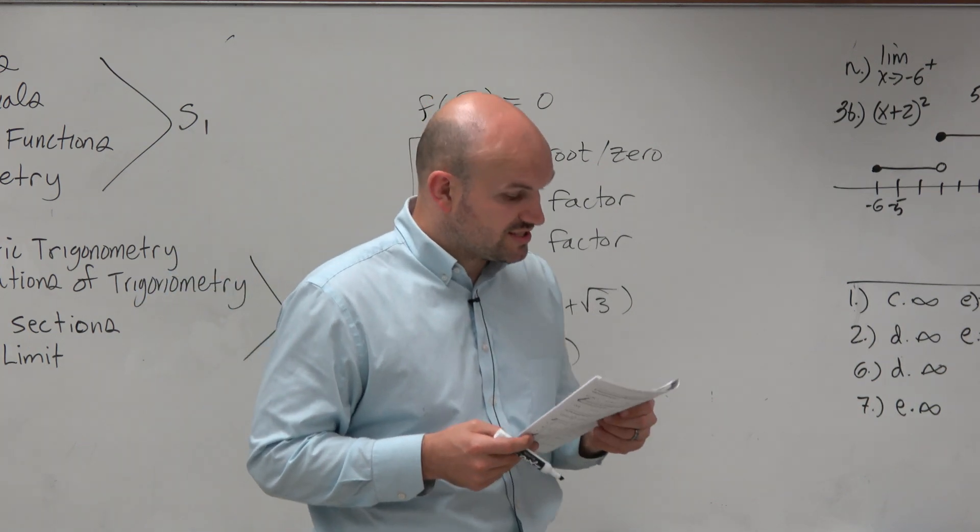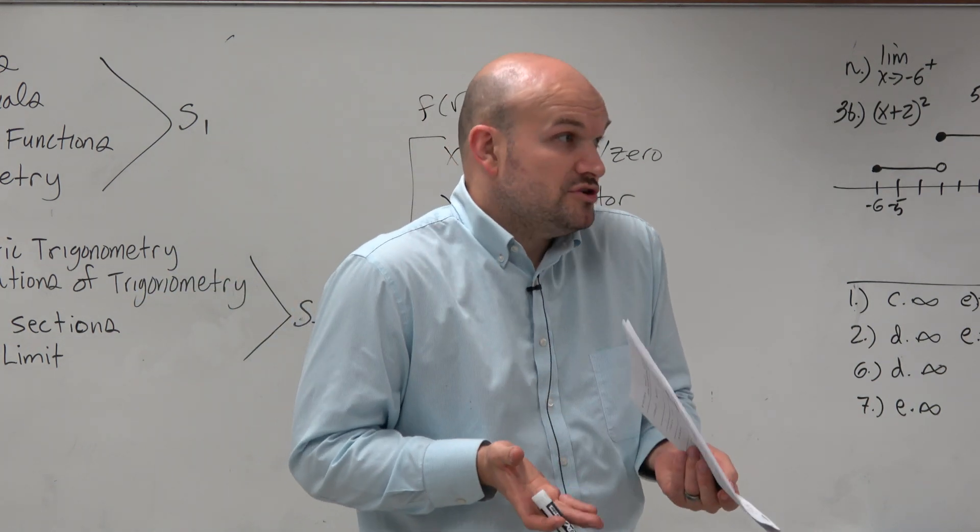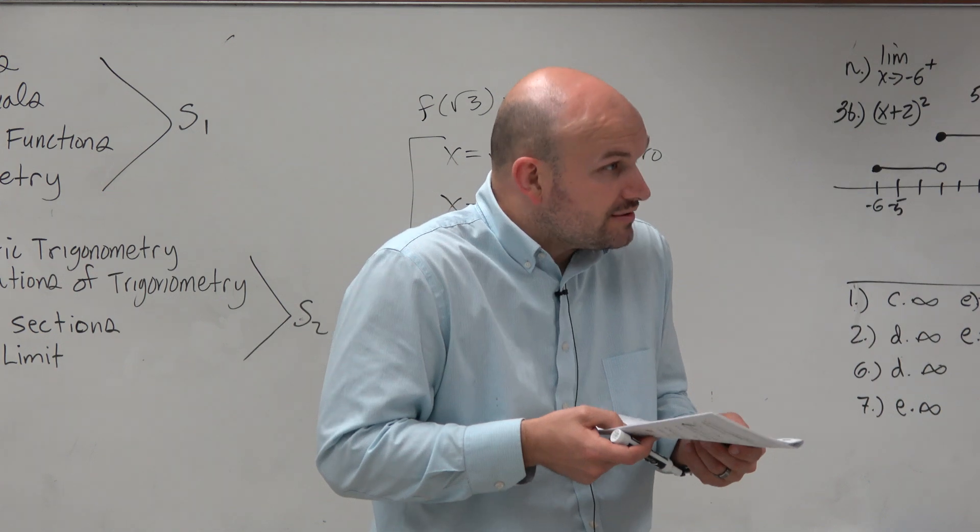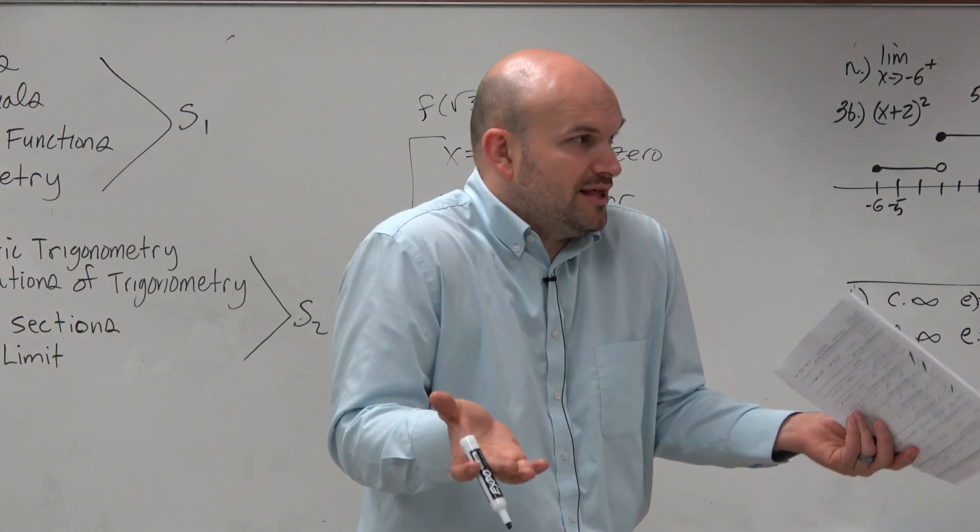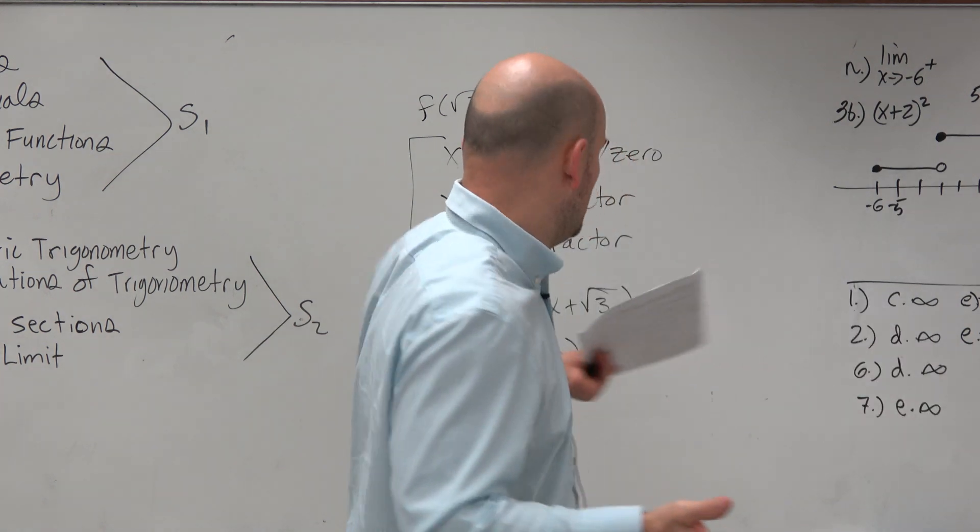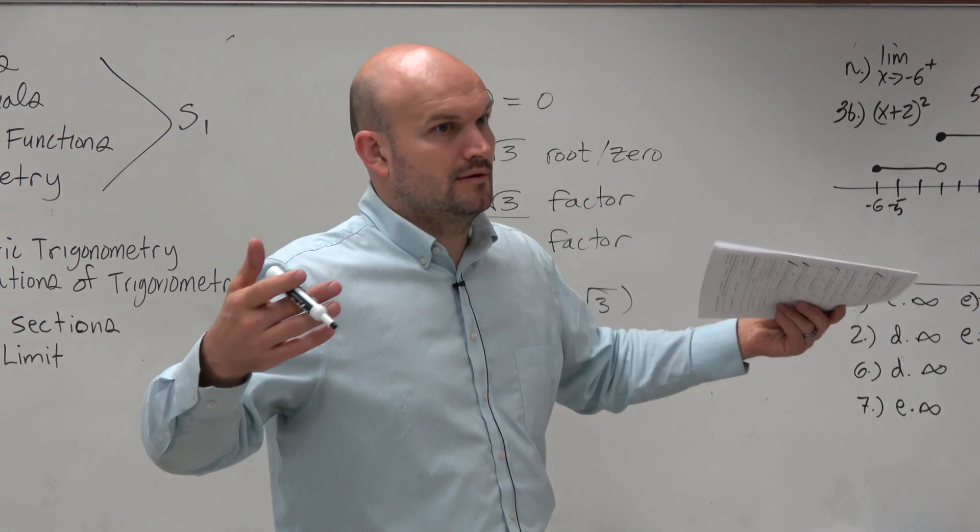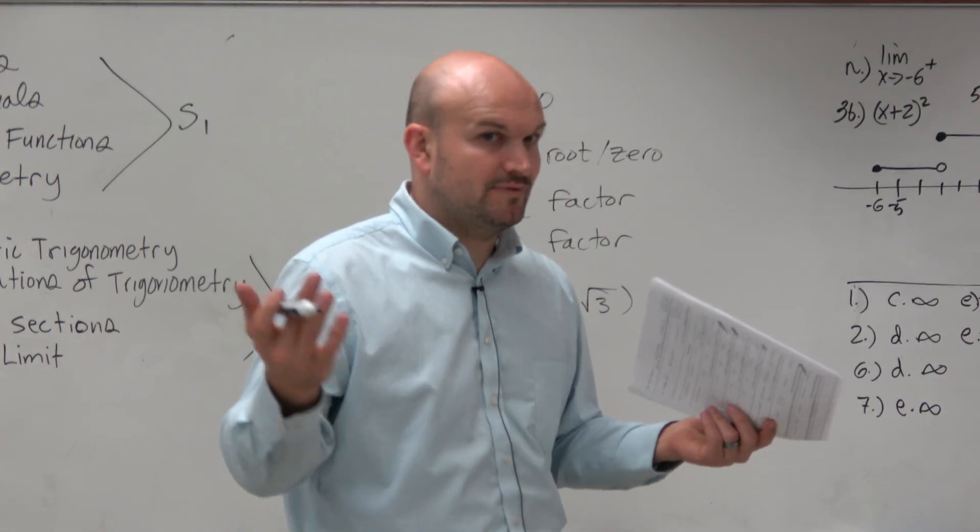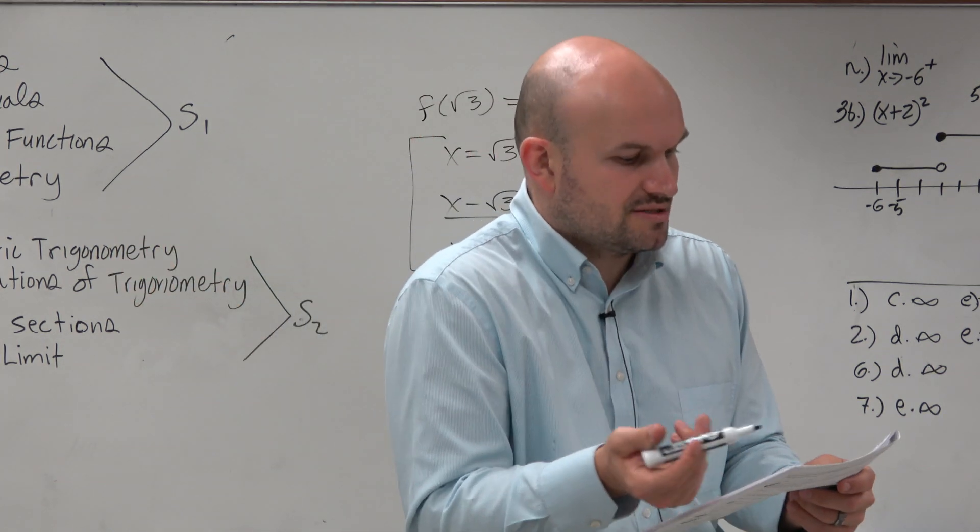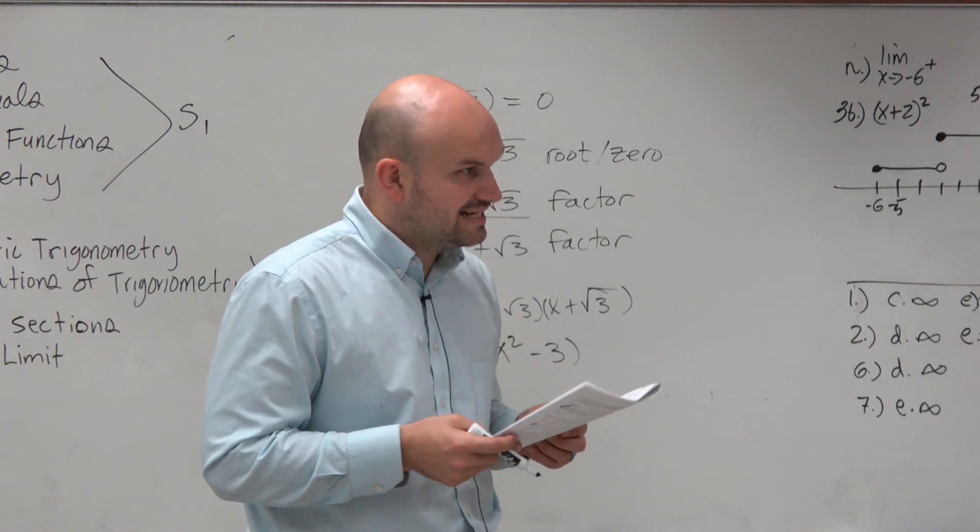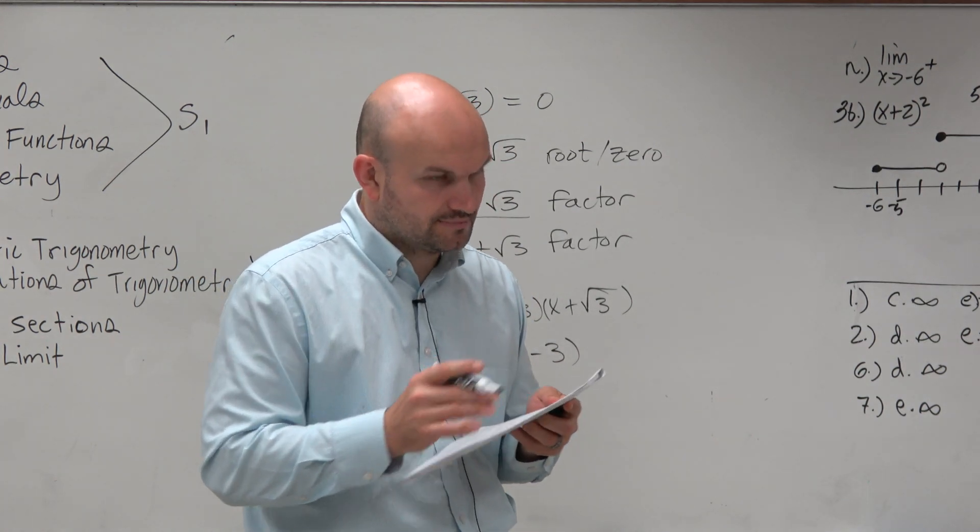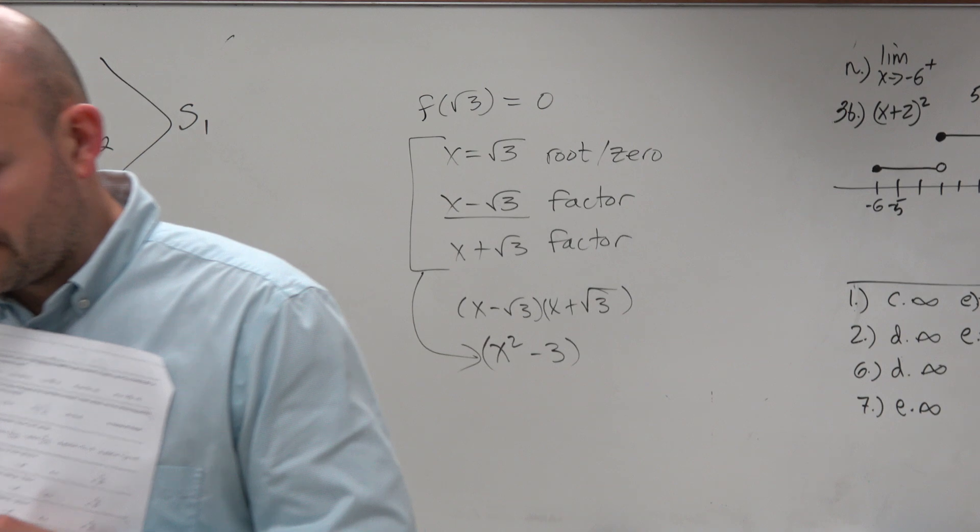And so therefore, the answer d, which is x squared plus 3, we have no, like that could be a factor. That's why I say it's not necessarily true. It could be a factor. We don't know. We don't know what the polynomial is, right? I mean, if the polynomial was x squared minus 3, well, then that's not a factor. But if the polynomial was like x to the eighth power or something, x squared plus 3 could be a factor of that, right? So d is the answer in this case. All right.